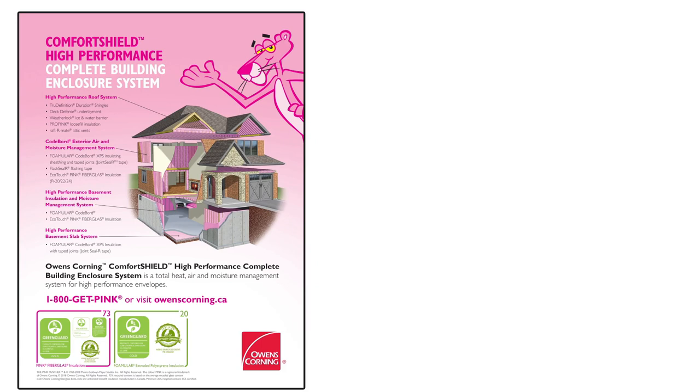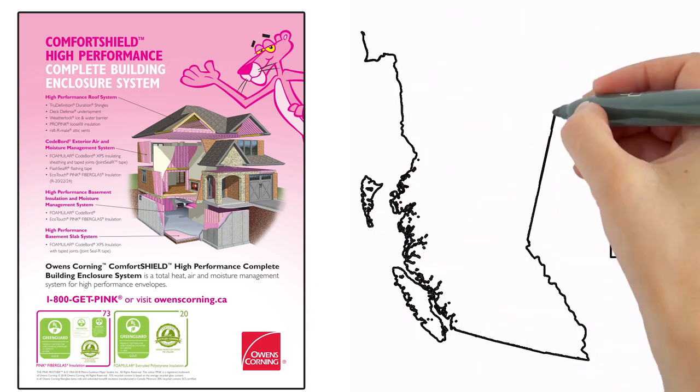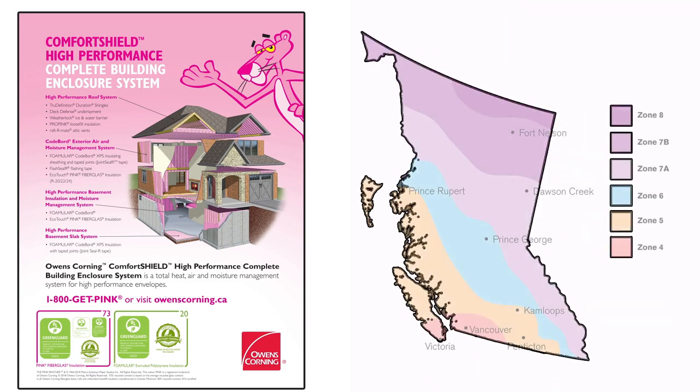Owens Corning product solutions are developed by ClimateZone to help you maximize the solutions required for any building project. The climate zones are Lower Mainland and Southern Vancouver Island, Zone 4, North Vancouver Island and the Interior, Zones 5 to 7A, and Zones 7B and 8 are at the north end of the province.